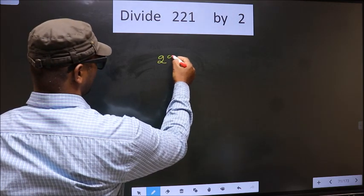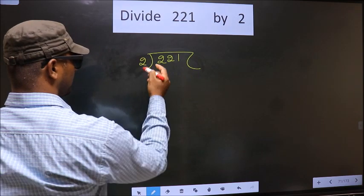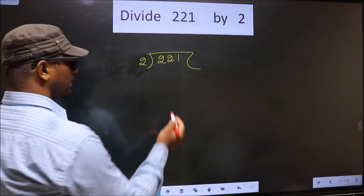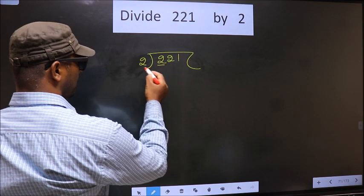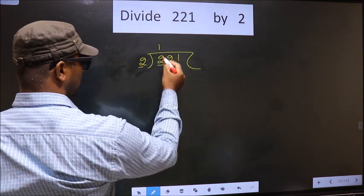That is 221, 2 here. Next, here we have 2. Here also 2. When do we get 2 in 2 table? 2 times 1 is 2.